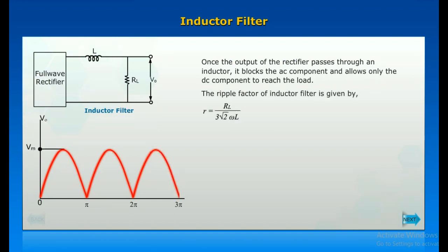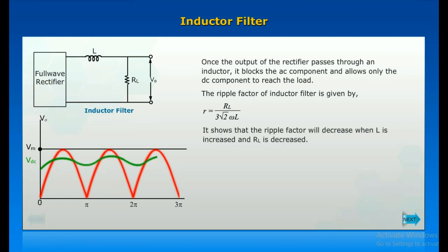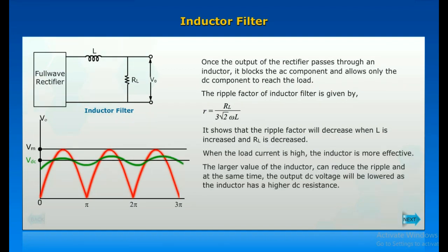The ripple factor of inductor is given by the formula. It shows that the ripple factor will decrease when L is increased and R_L is decreased. When the load current is high, the inductor is more effective. The larger value of the inductor can reduce the ripple, and at the same time, the output DC voltage will be lowered as the inductor has a higher DC resistance.